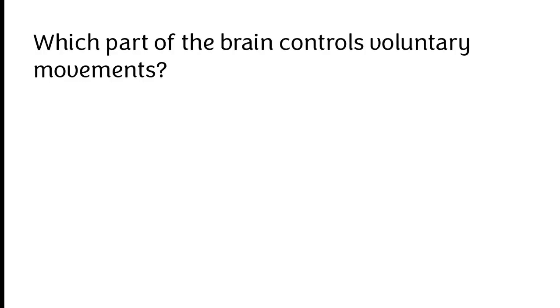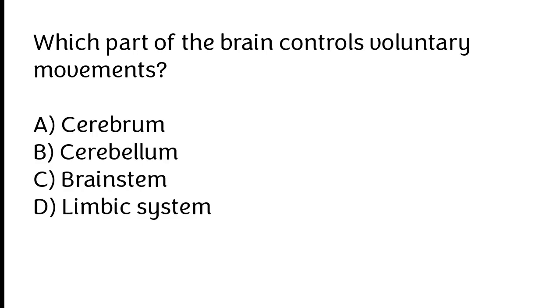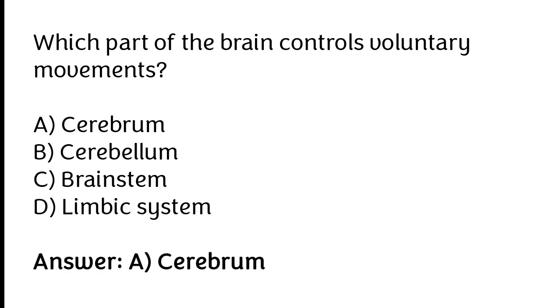Which part of the brain controls voluntary movements? Cerebrum, cerebellum, brain stem, limbic system. The correct answer is option A — the cerebrum controls voluntary movements.